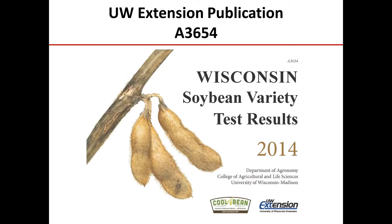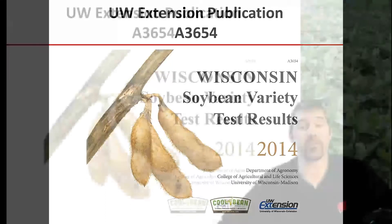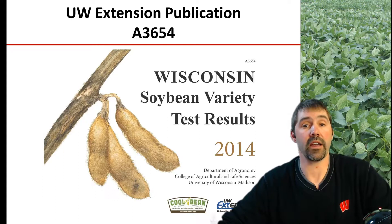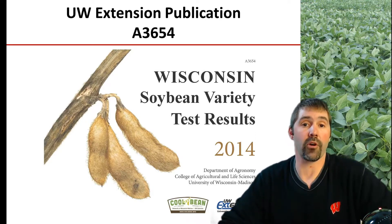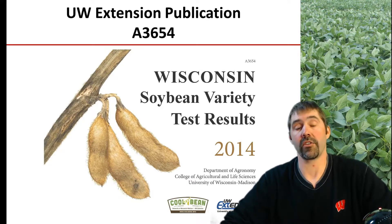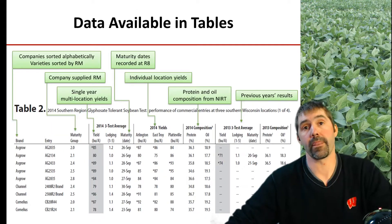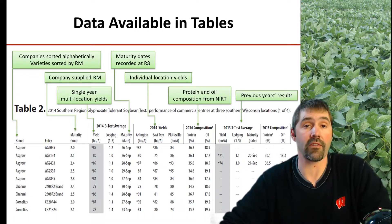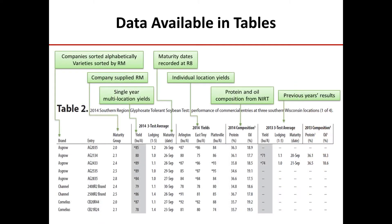One of the key tools we discuss with Wisconsin growers is the Wisconsin Soybean Variety Test Results, UW Extension Publication A3654. This is a compilation of variety trial results that is unbiased and takes all companies into account to identify which varieties across any company platform perform best over a wide range of environmental and geographical locations across Wisconsin. It's available for download from our webpage or published in multiple newspapers in early December.